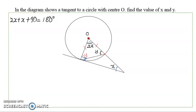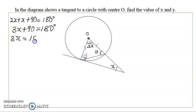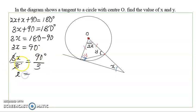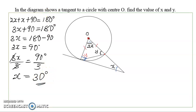So we have 2x plus x plus 90 degrees equals 180 degrees — that is the sum of angles in a triangle. This gives us 3x plus 90 equals 180, so 3x equals 90. Dividing both sides by 3, we get x equals 30 degrees.